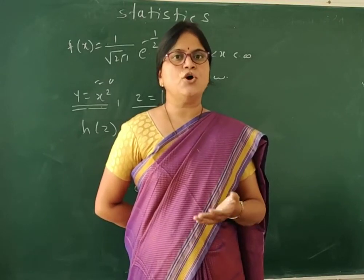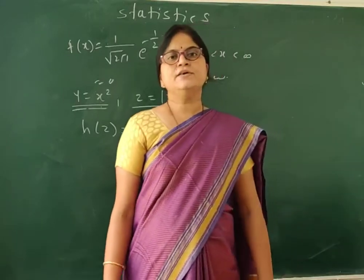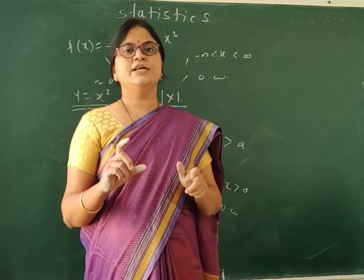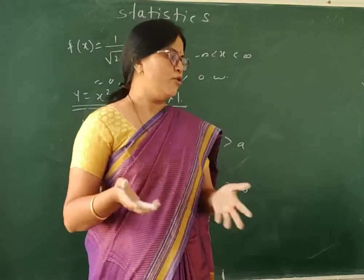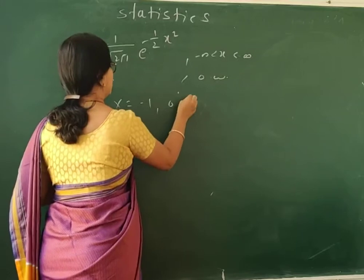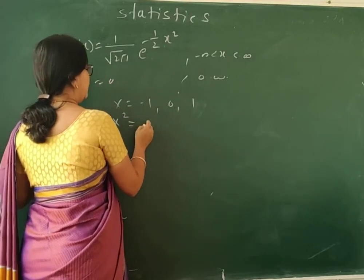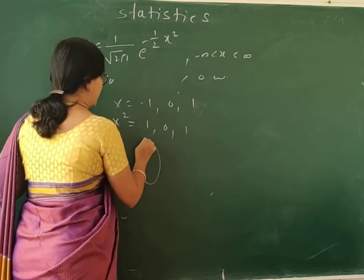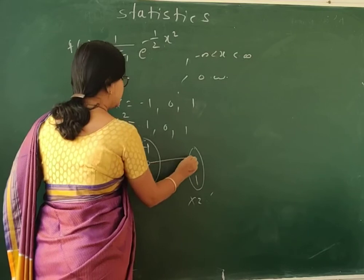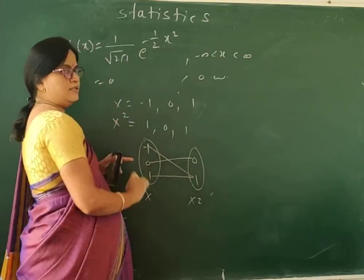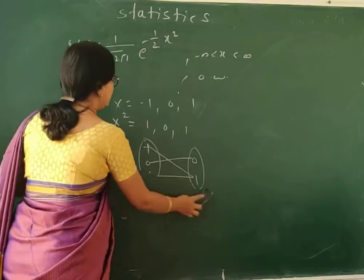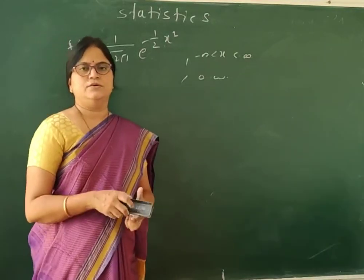This distribution function method is used for finding the distribution of non-monotone functions. Non-monotone functions mean there is no one-to-one relation; we get a many-to-one relation. For example, if x takes values −1, 0, 1, then X² gives values 1, 0, 1 — so both −1 and 1 map to 1. That is a many-to-one relation, meaning the function X² is a non-monotone function, and for such non-monotone functions we use this method. Thank you.